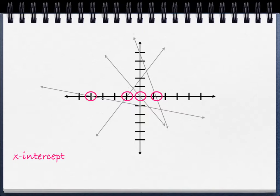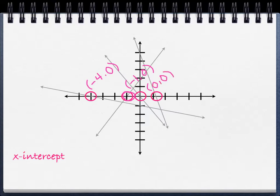And what I want you to notice is if you were to write the coordinates of those points — this spot right here, for example, would be negative 4, 0. This point here would be negative 1, 0. Right here in the center is 0, 0. And this one I'm going to call maybe 1.2, 0. But what I really want you to recognize is what these points have in common. If they're points on the x-axis, the y-value is always 0, and that's going to be important.